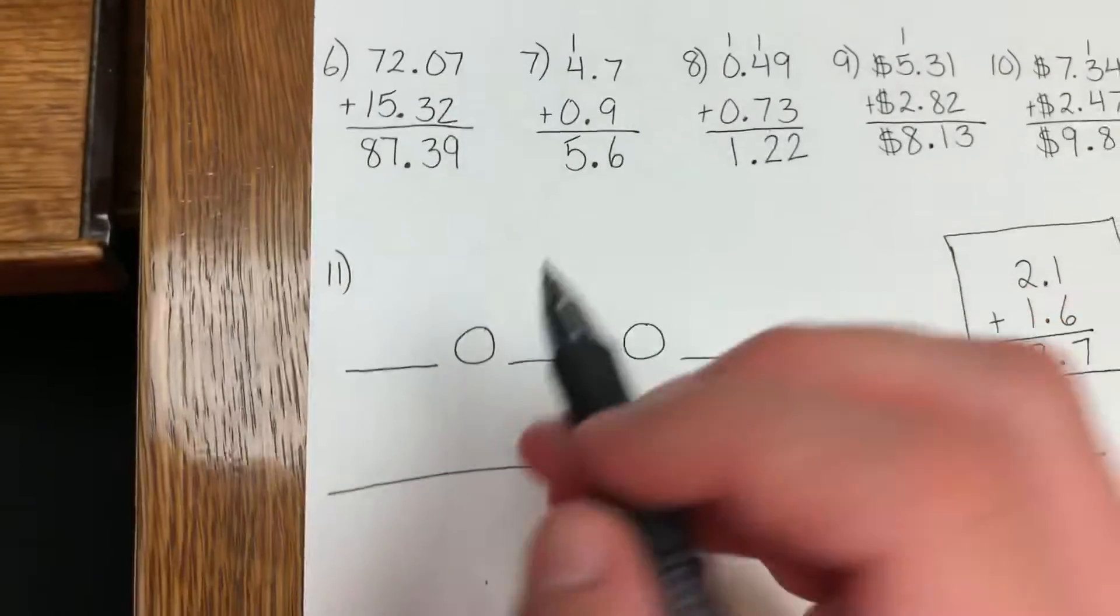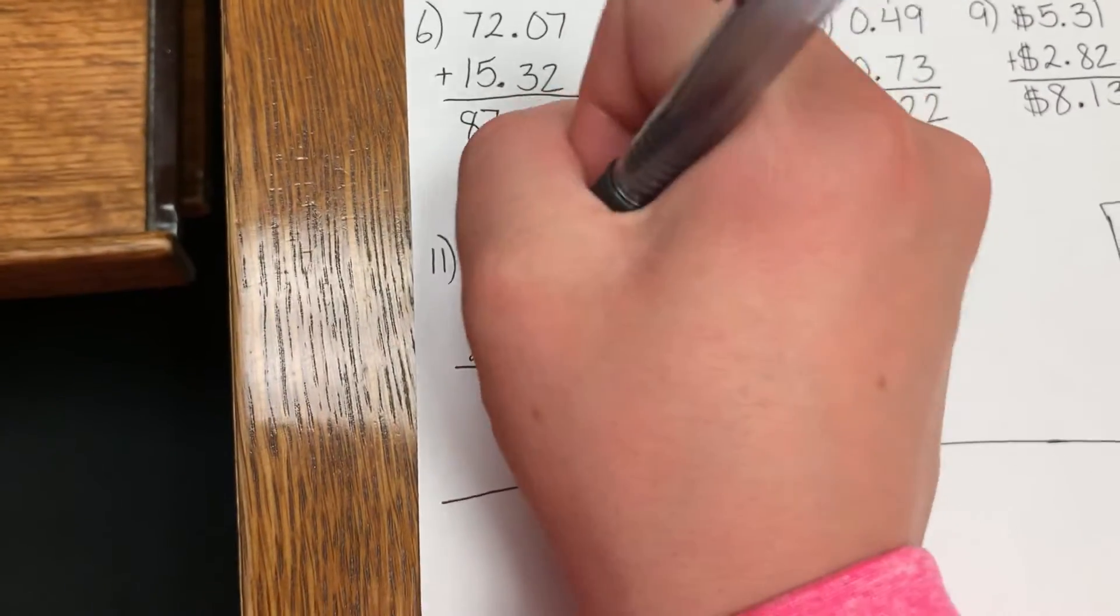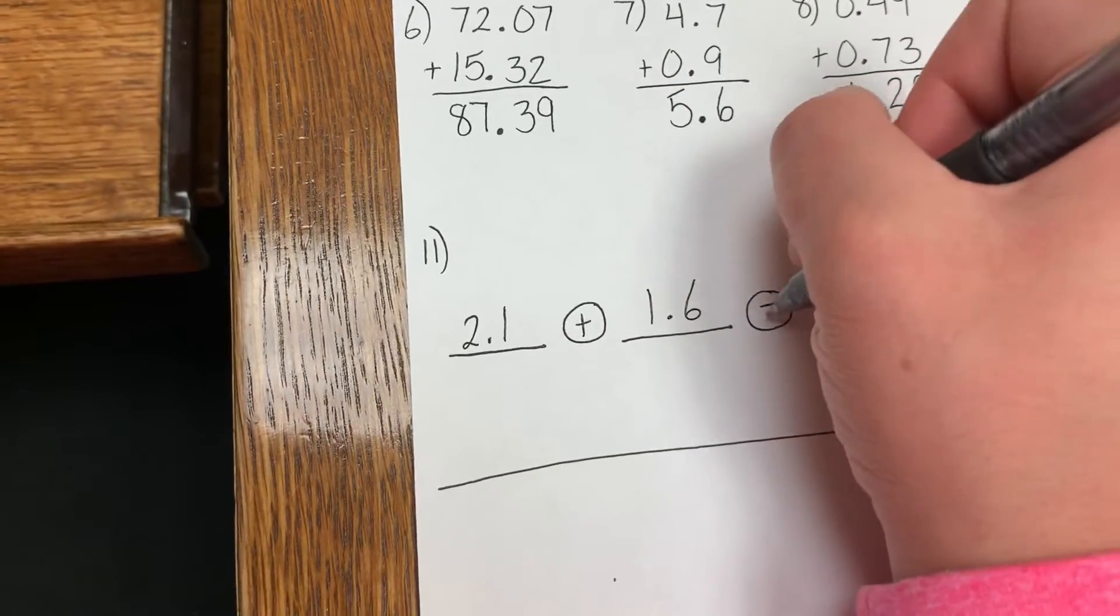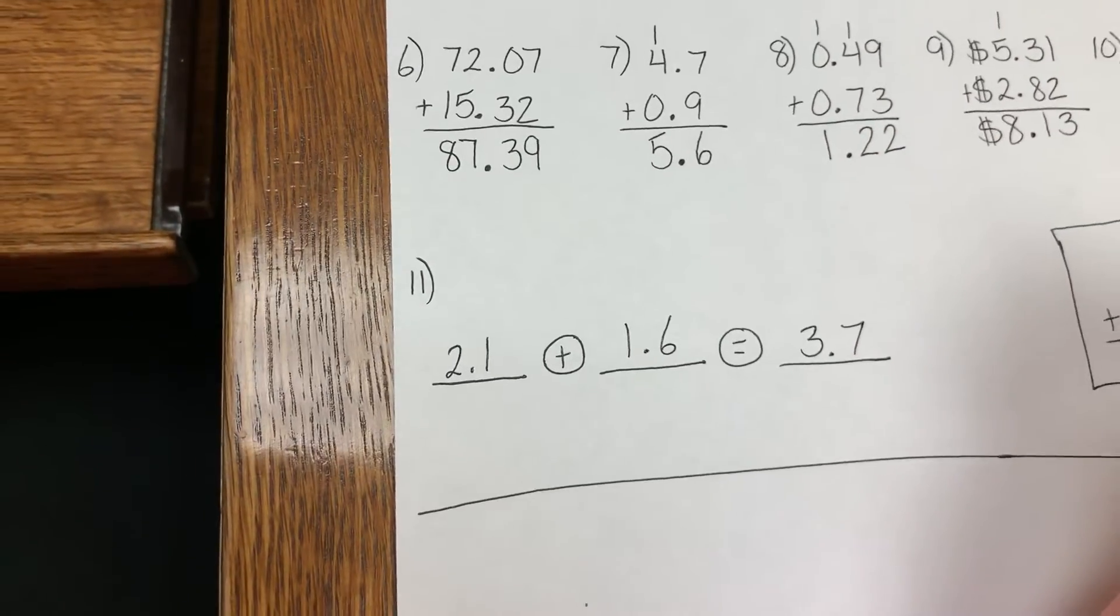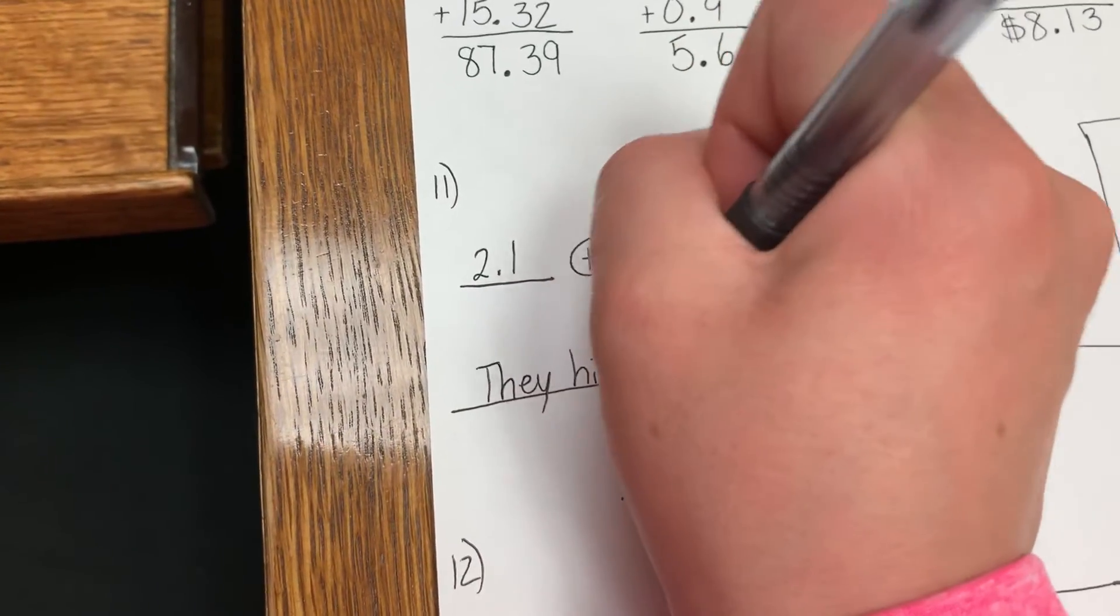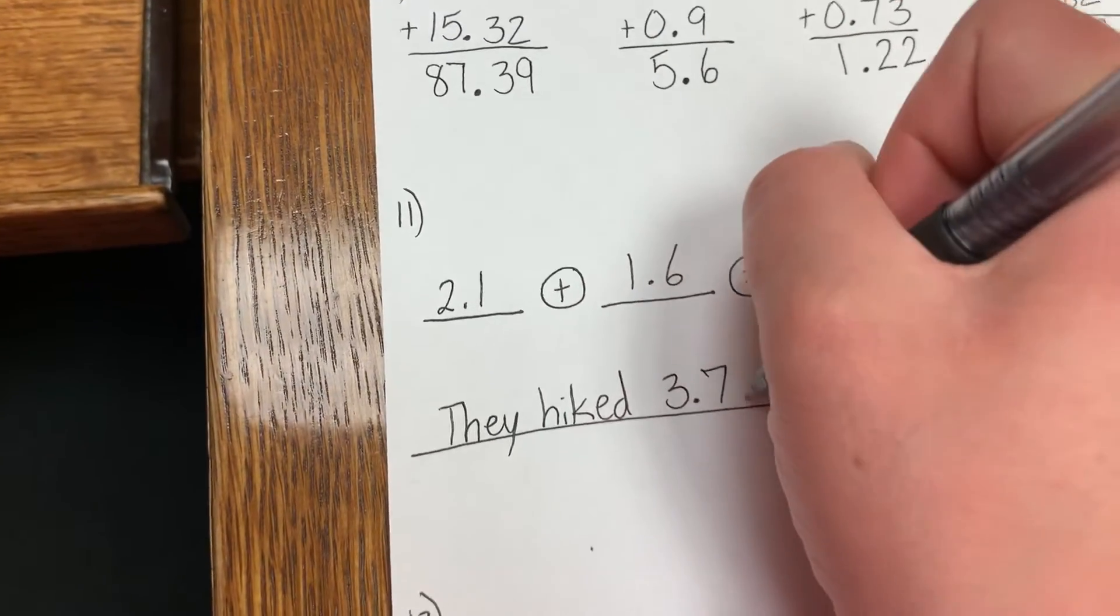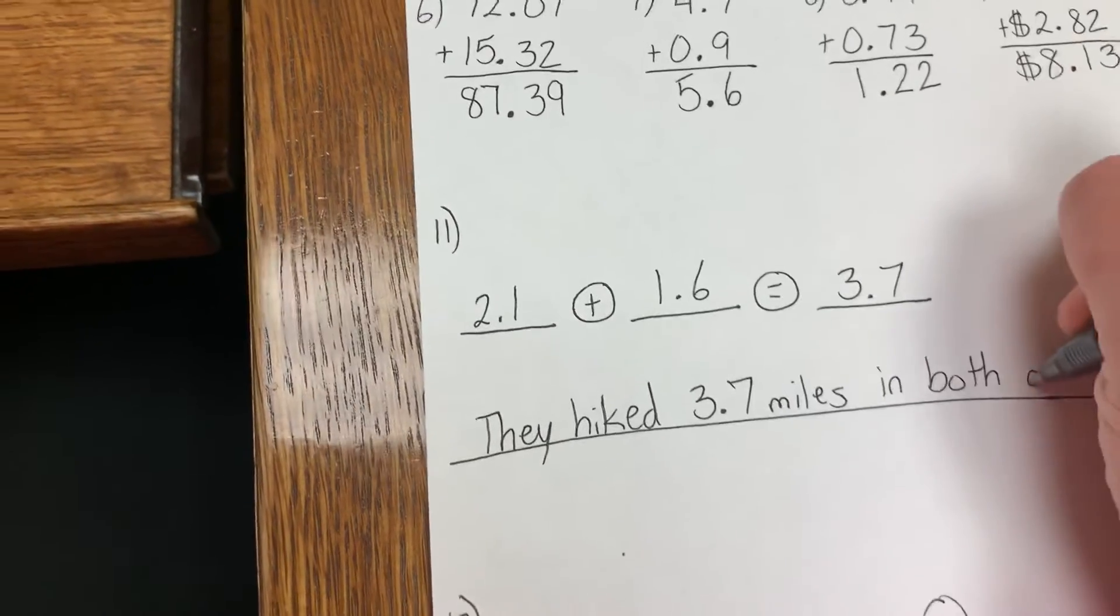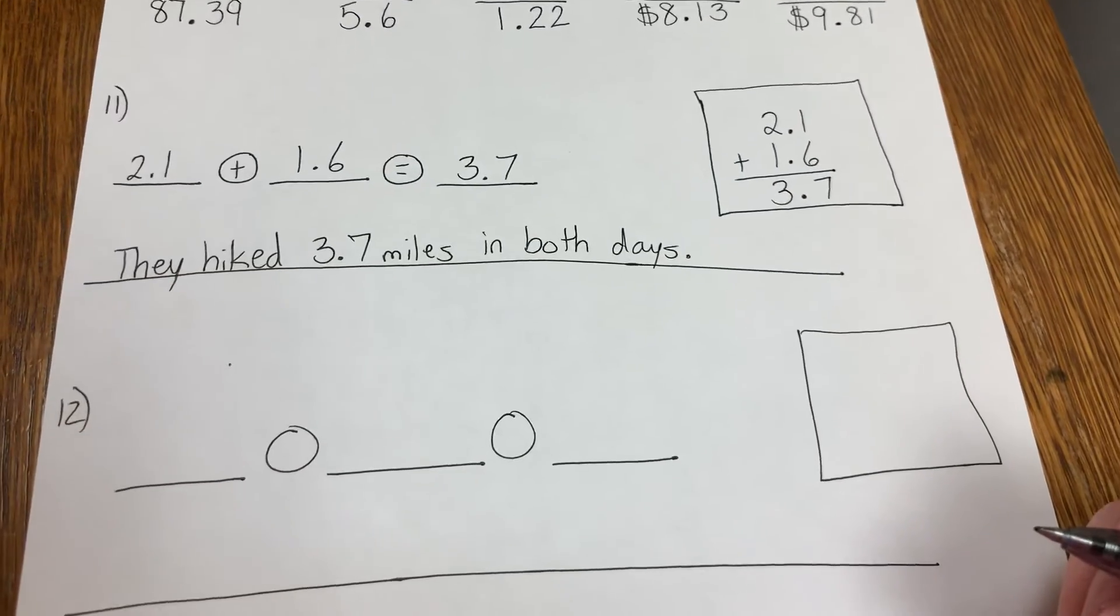And then they want you to write it over here in the horizontal format. So 2.1 plus 1.6 equals 3.7. And then we're going to write in a sentence: They hiked 3.7 miles in both days. Period. Okay, that was number 11.